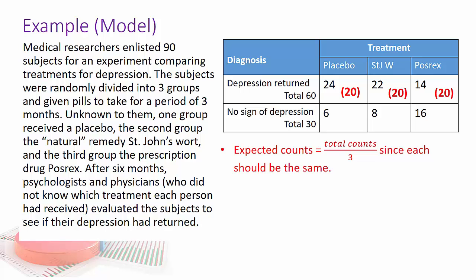For the bottom row, I'm going to divide 30 by 3 and I get 10 for each one, because if the response rate was the same, you would expect that these would basically be evenly split.